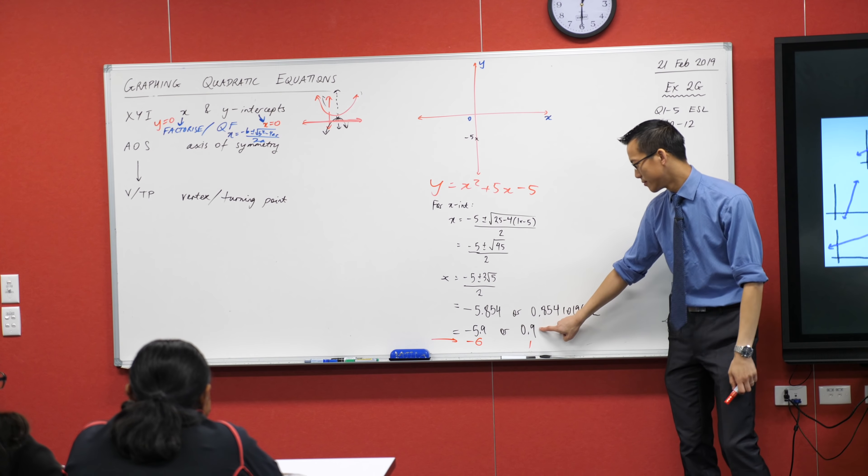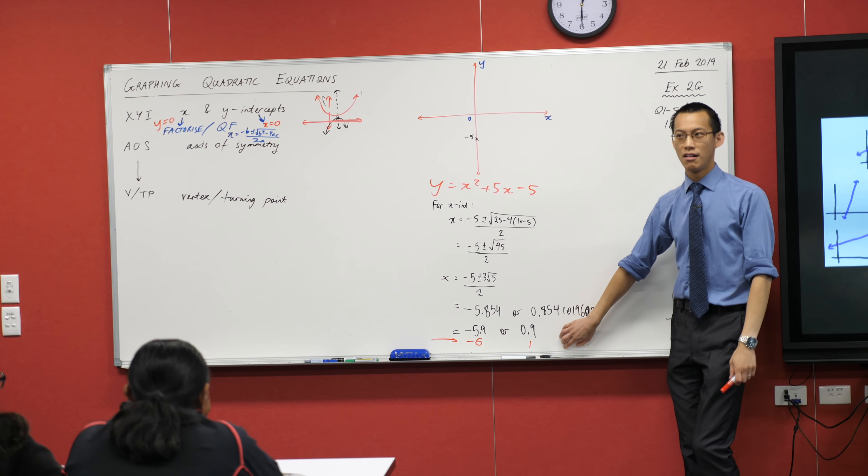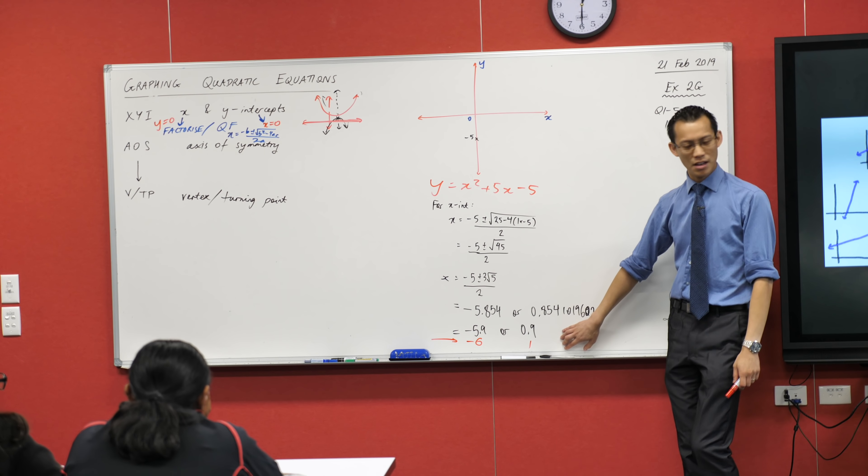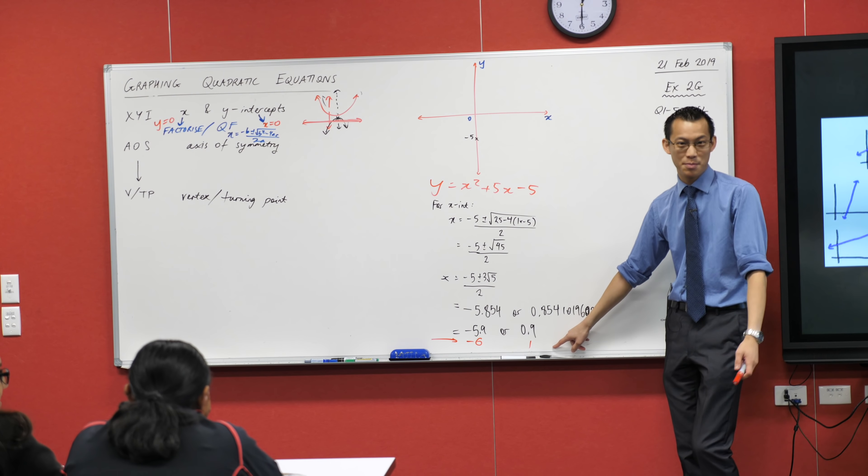That's one decimal place and that's one whole thing. So this is one decimal place, this is zero decimal places. Why is there such a big difference?